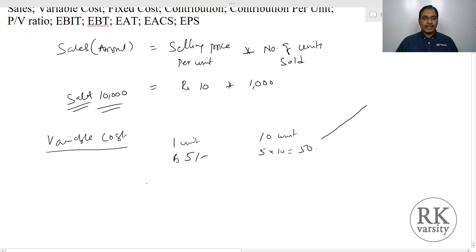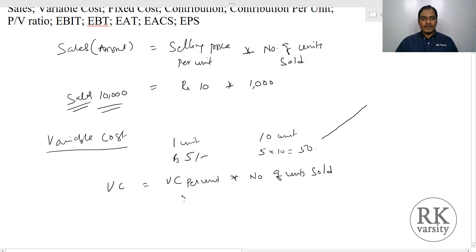Variable cost equals variable cost per unit times number of units sold. So if your variable cost is Rs.5 and you sold 1000 units, then your variable cost is Rs.5000.